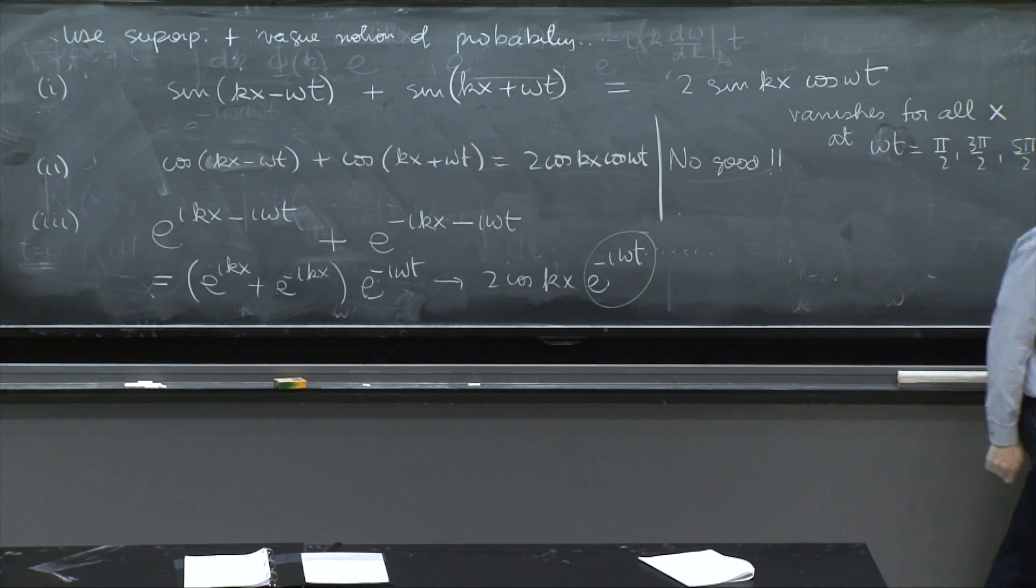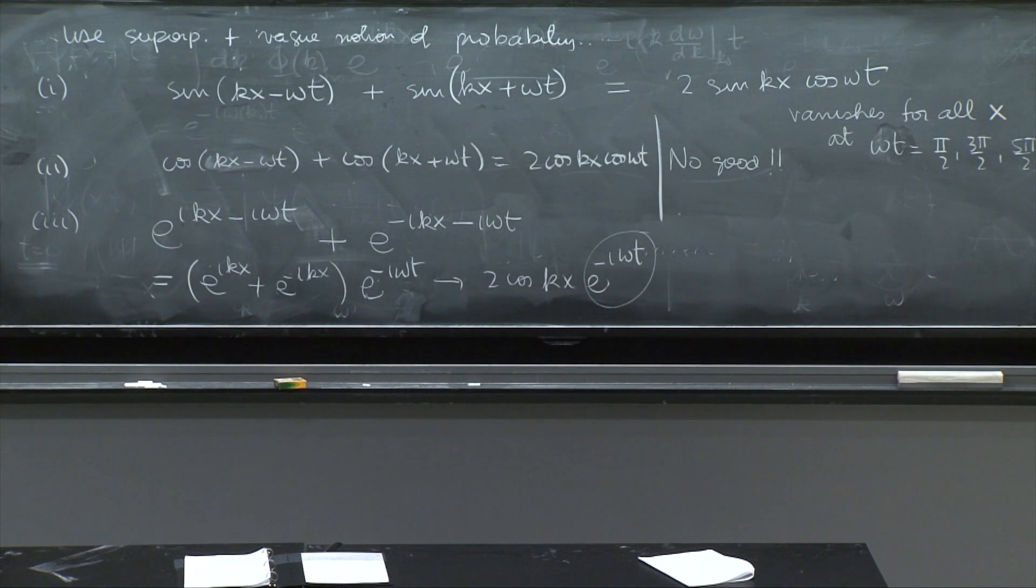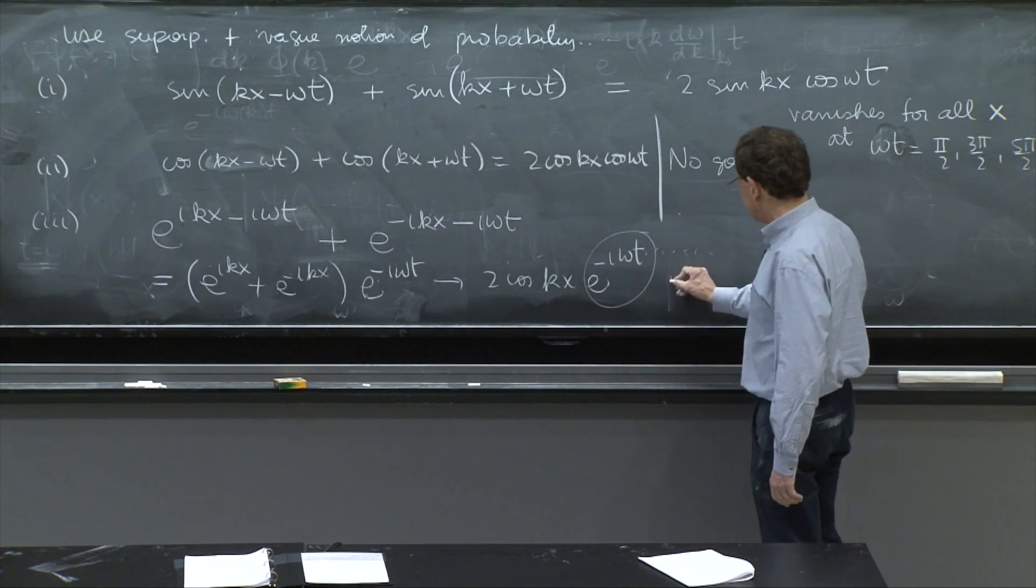The e to the minus i omega t is never zero. The exponential of something is never zero, unless that something is real and negative, and a phase is never zero.